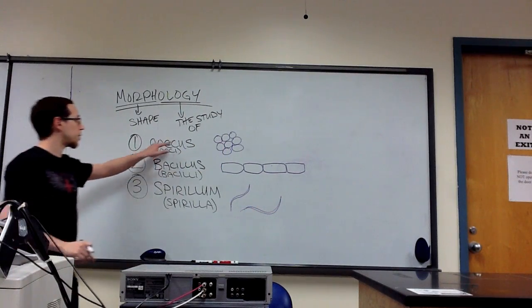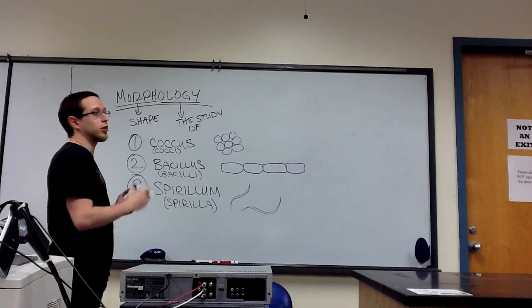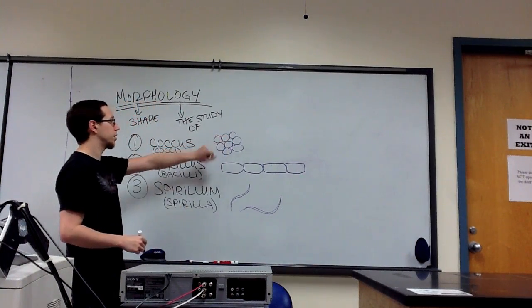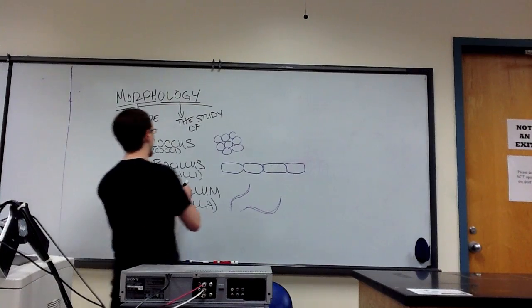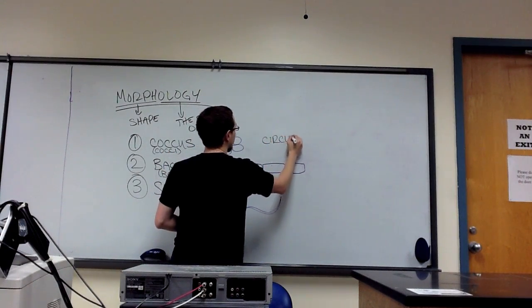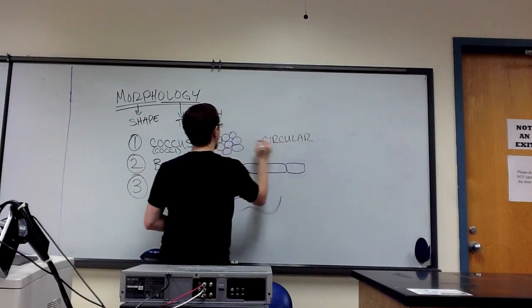Okay, so an easy way to remember these three classifications is to go by alliteration. You'll notice that I drew the cocci as circles. So coccus is circular. Both began with a C.